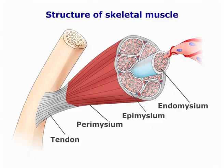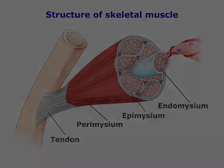The fascia of the epimysium, perimysium, and endomysium is continuous with and contributes to the formation of tendons.